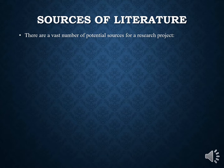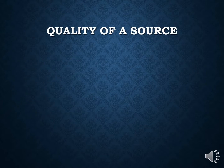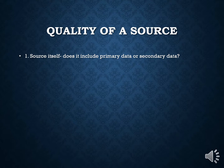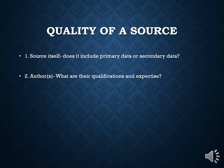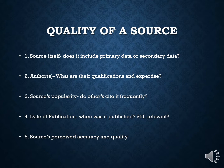Some of our sources of literature include the following. There are a vast number of potential sources for a research project. It can come from peer-reviewed journals, books and textbooks, conference papers, websites, newspapers, as well as magazines. It can also come from master's and doctoral theses as well as dissertations. The quality of a source is very important because all sources aren't really reliable. When we look at the source itself, it includes primary data or secondary data; the authors' qualifications and expertise; the source's popularity and whether other sites cite it frequently; the date of publication and whether it is still relevant; and the source's perceived accuracy and quality. These are five important areas when looking at the quality of a source.